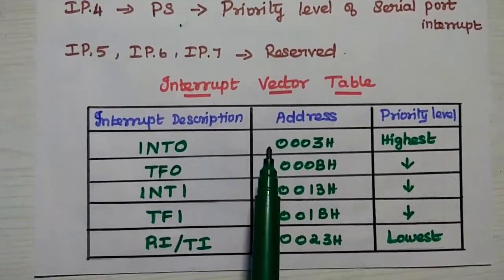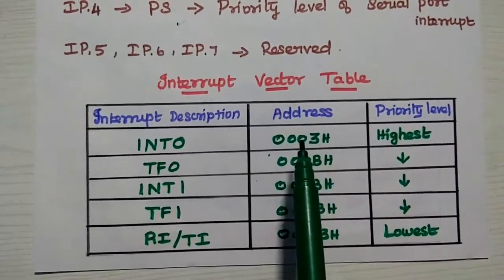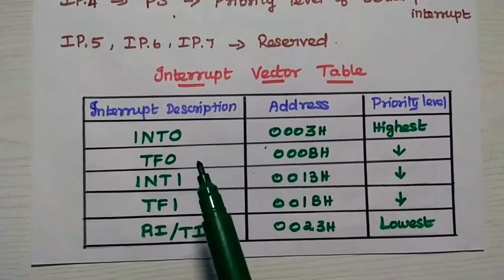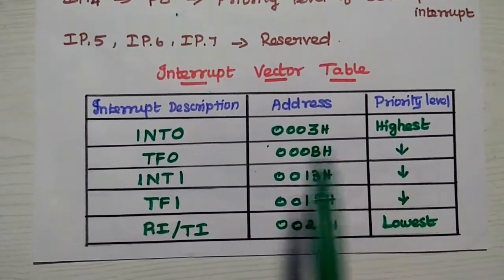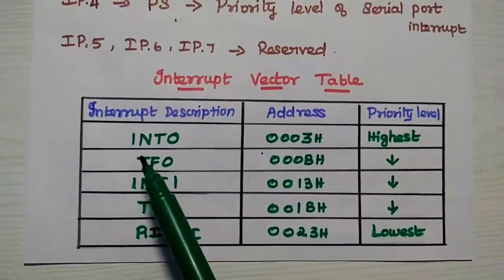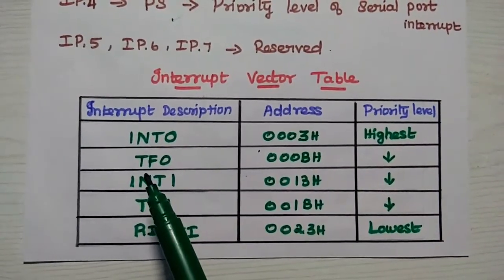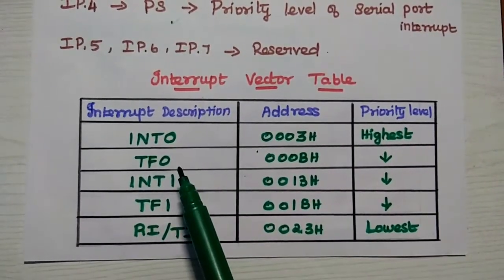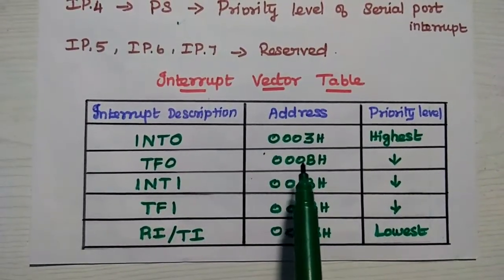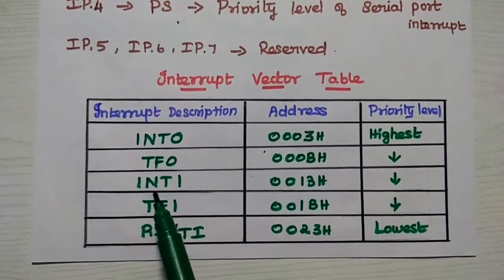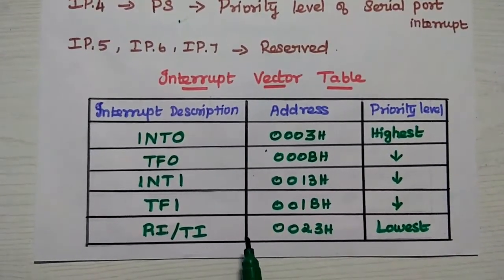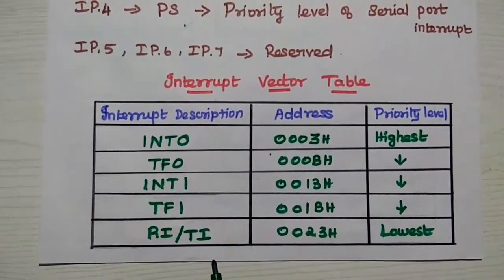Next is the interrupt vector table. Here, vector means a memory address. Each interrupt has its own memory address in AT51 and a default priority level. The highest priority is given to INT0, the external hardware interrupt 0, at memory location 0003H. The next priority is timer 0 overflow interrupt at location 000BH. Then INT1, followed by TF1, and the lowest priority is given to the serial communication interrupt RI/TI.